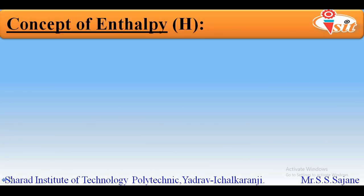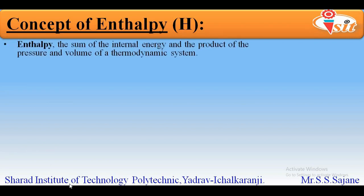Now let's see the concept of enthalpy. Enthalpy is defined as the sum of the internal energy and the product of pressure and volume of a thermodynamic system. Mathematically: H = U + PV, where H is enthalpy, U is internal energy, P is pressure, and V is the volume of the system.